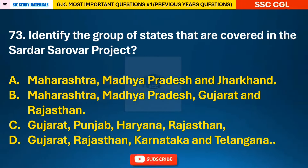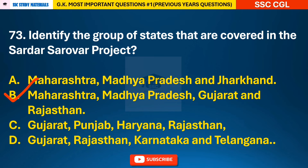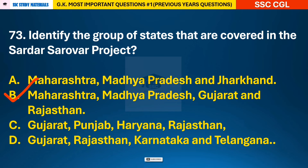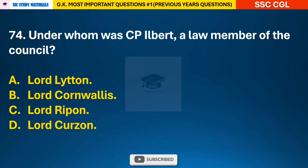Question 73: Identify the group of states that are covered in the Sardar Sarovar Project — answer B: the states are Maharashtra, Madhya Pradesh, Gujarat, and Rajasthan. Question 74: Under whom was C.P. Ilbert a law member of the council? — answer C: Lord Ripon.